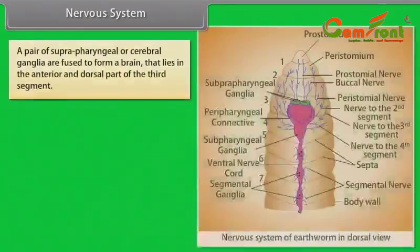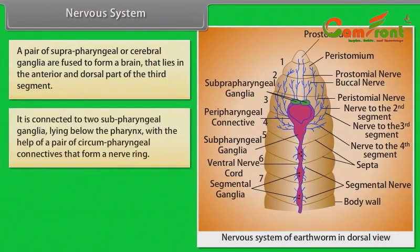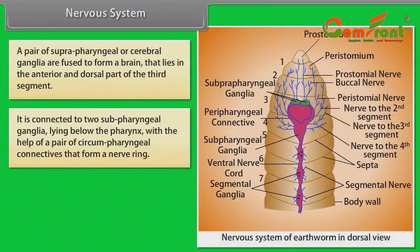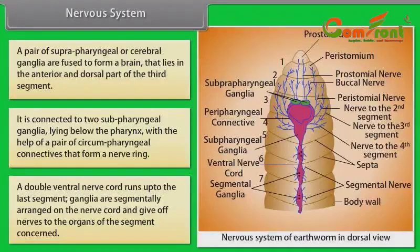Nervous System: A pair of suprapharyngeal or cerebral ganglia are fused to form a brain, lying in the anterior dorsal part of the third segment. It is connected to two subpharyngeal ganglia lying below the pharynx via a pair of circumpharyngeal connectives forming a nerve ring. A double ventral nerve cord runs to the last segment, with ganglia segmentally arranged giving off nerves to the organs of each segment.